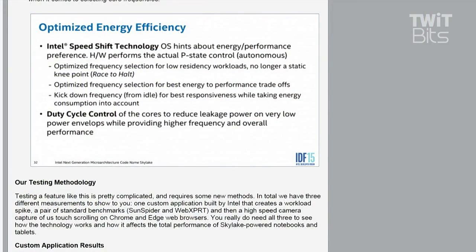Those tenths of a second add up though. The idea of Speed Shift is that the processor itself is now able to say, 'I know what my workload is, and I think this is a task we can get done quickly but it's also important, so we're going to jack up the speed very quickly.' It can do that 10 times faster — jumping from idle to maximum clock speed 10 times faster than before Speed Shift was enabled in the operating system.